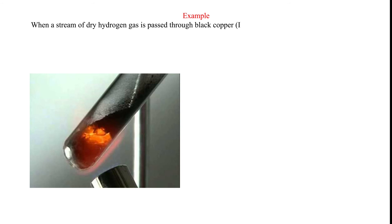Example: When a stream of dry hydrogen gas is passed through black copper (II) oxide, hydrogen gas gains the oxygen from copper (II) oxide.